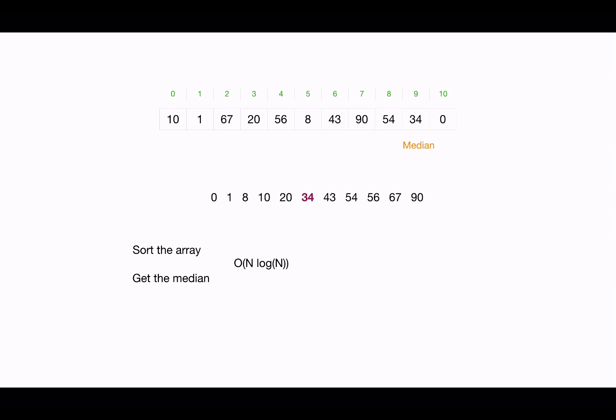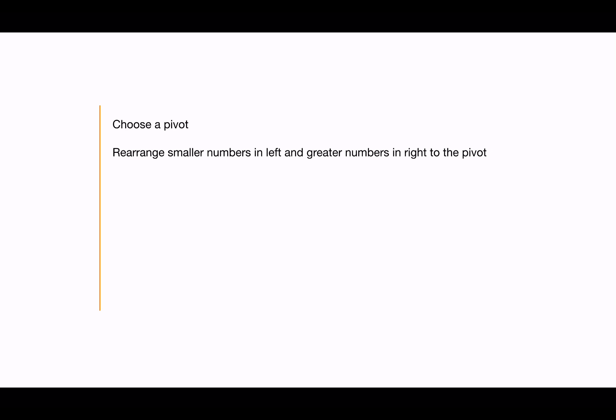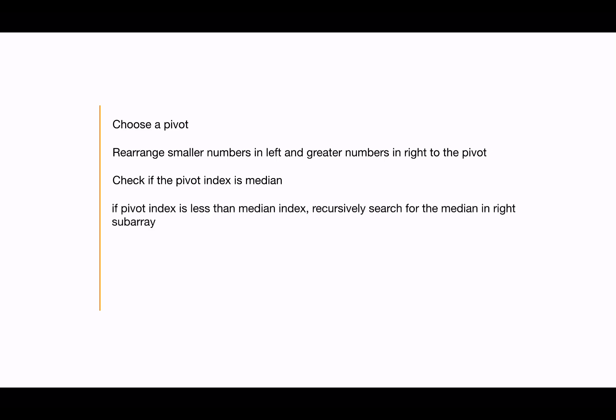There's another solution with O(n) complexity based on the QuickSort algorithm. We choose a pivot element, rearrange the numbers like in QuickSort, and return the pivot index. We then check if the pivot index is the middle index — if so, we've found the median. If the pivot index is less than the median index, we recursively search in the right subarray; if it's greater, we recursively search in the left subarray.